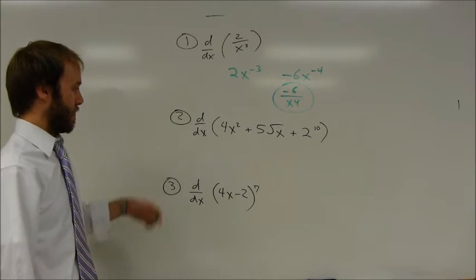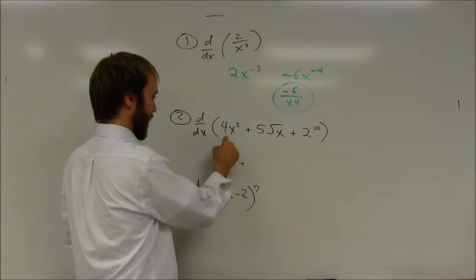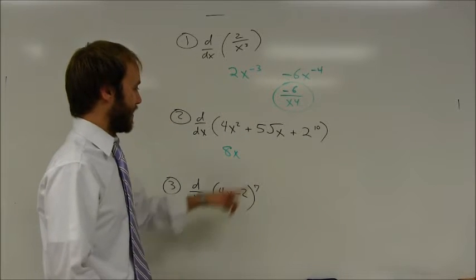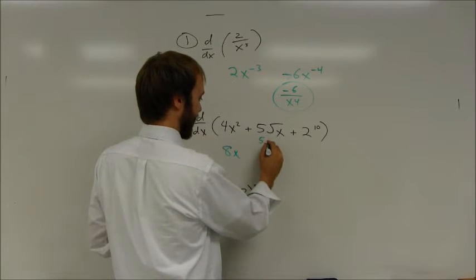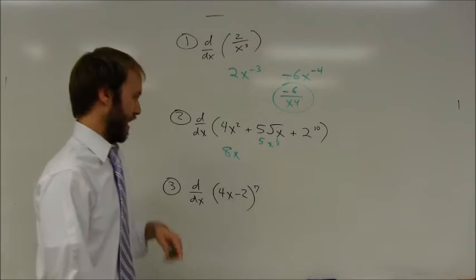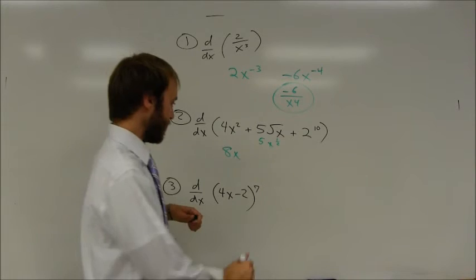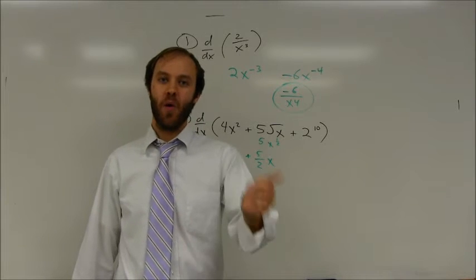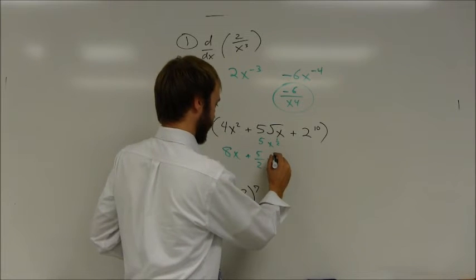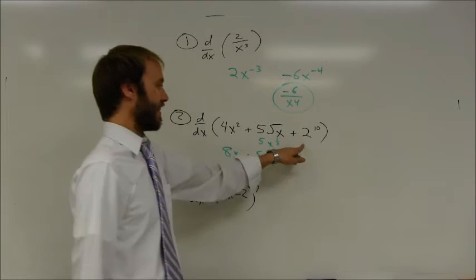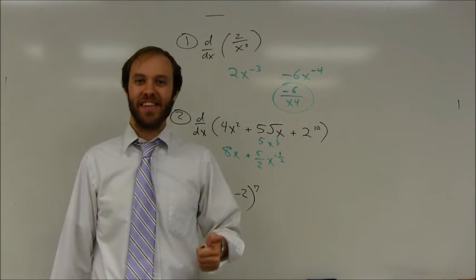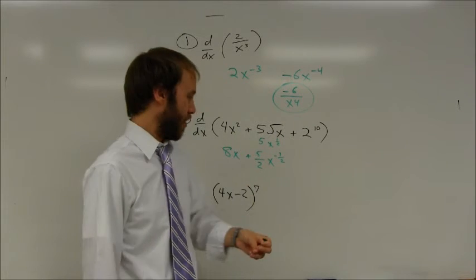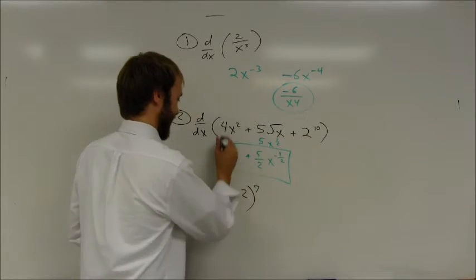Second example — basic power rule. 2 times 4 is 8x to the first power when I drop my exponent by 1. The second term: remember that's 5 times x to the first, so when I multiply, I get 5. The last term is a constant value; the derivative of any constant is always equal to zero. I am done — that is my derivative.